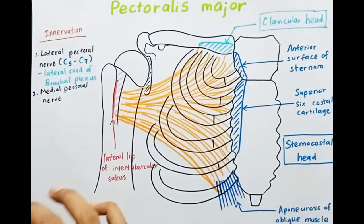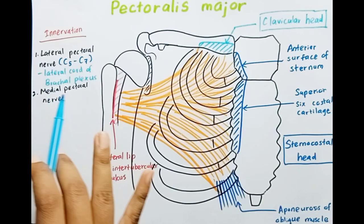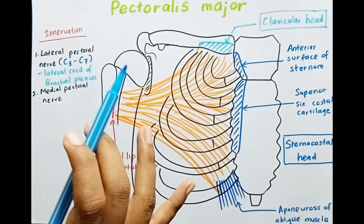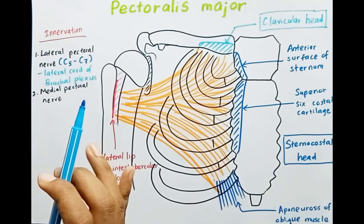The medial pectoral nerve arises from the medial cord of the brachial plexus, and it is typically from the roots C8 and T1.